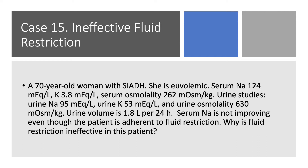Case 15, ineffective fluid restriction. 70-year-old woman with SIADH, she's euvolemic by definition. Serum sodium 124, potassium 3.8, serum osmolality 262, so it's hypoosmolar hyponatremia. Urine shows sodium 95, potassium 53, urine osmolality 630, urine volume 1.8 liters. Serum sodium is not improving, even though she's adherent to fluid restriction of 1800 cc's per day. Why is fluid restriction ineffective in this patient?